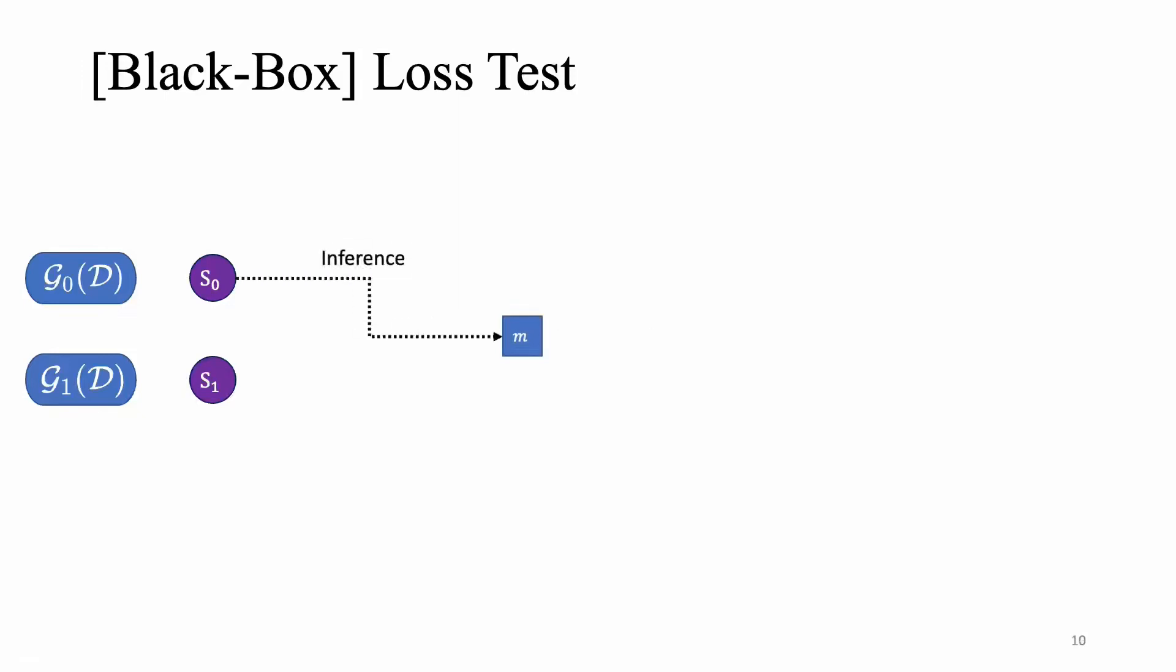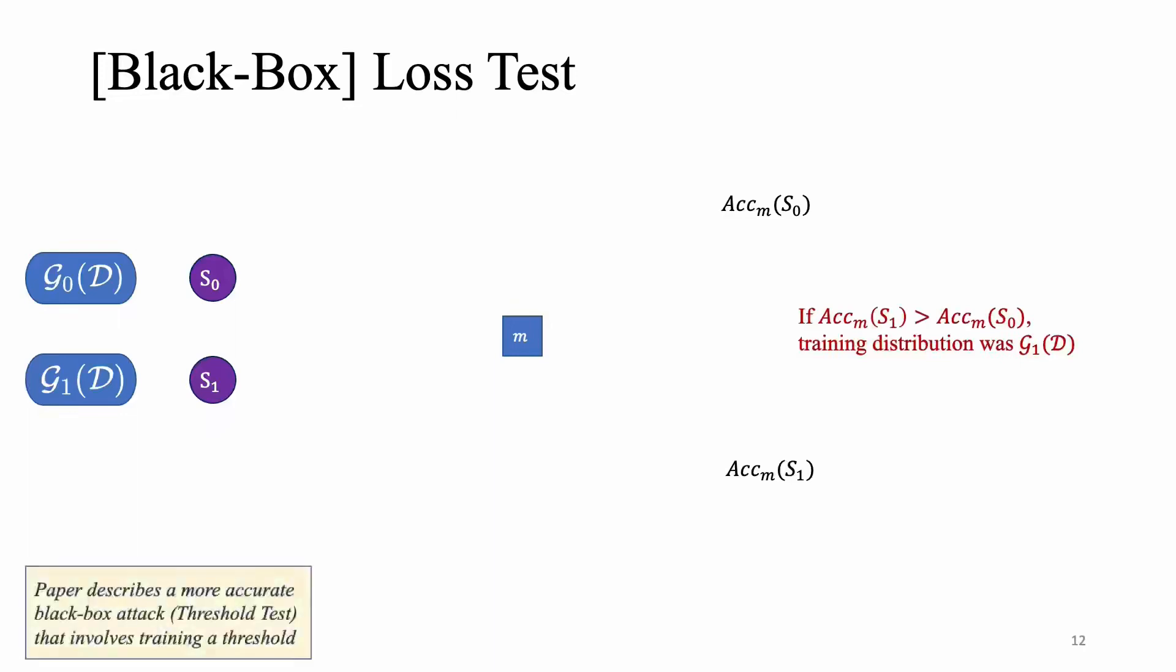It will perform inference on the first set of data and take note of the accuracy it observes, and then repeat the same thing for the second set of data. And then follow a very straightforward rule that essentially says that if the accuracy observed for this model is higher for data from the second distribution, then it's more likely that the model was from the second distribution. Which is expected because of the two possible distributions, the one that it was actually trained on data from, it's more likely to be better performing on that.